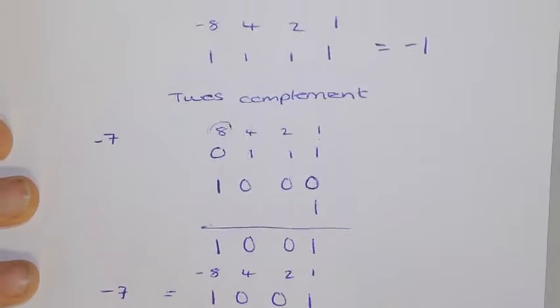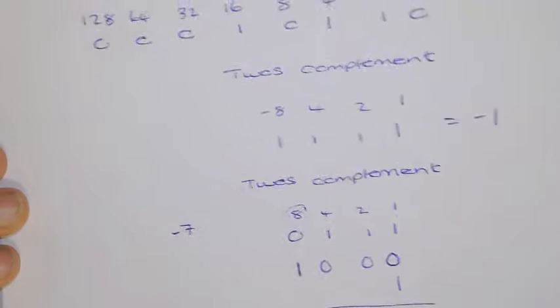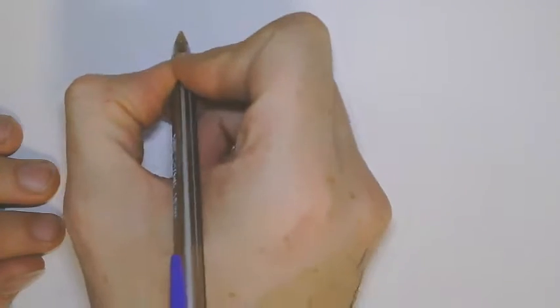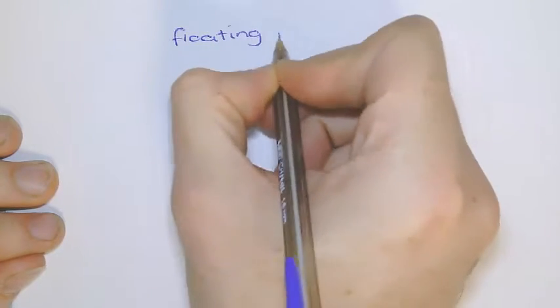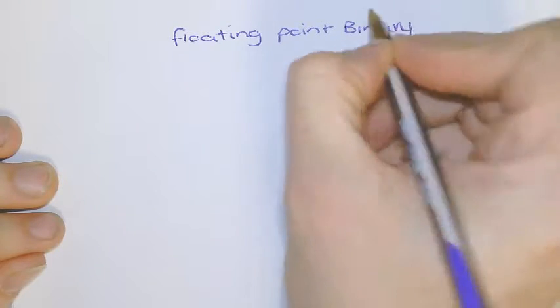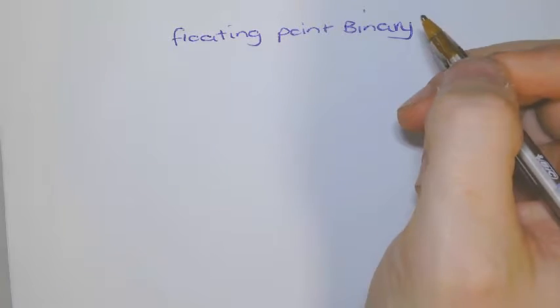So, that's what we went over recently for two's complement. Now, what we're going to go over now, is just a quick example of representing real numbers. So, if you've got to represent a decimal number, this is called floating-point binary. And this is just part 1 in this video set.